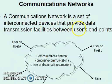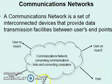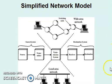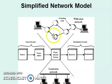A communication network is a set of interconnected devices that provide data transmission facilities between user endpoints. You can see a cloud here which represents many resources and networks connecting different users. As discussed with the communication model, a network model needs a source system, a destination system, and a transmission system — which can be a local area network or a wide area network.